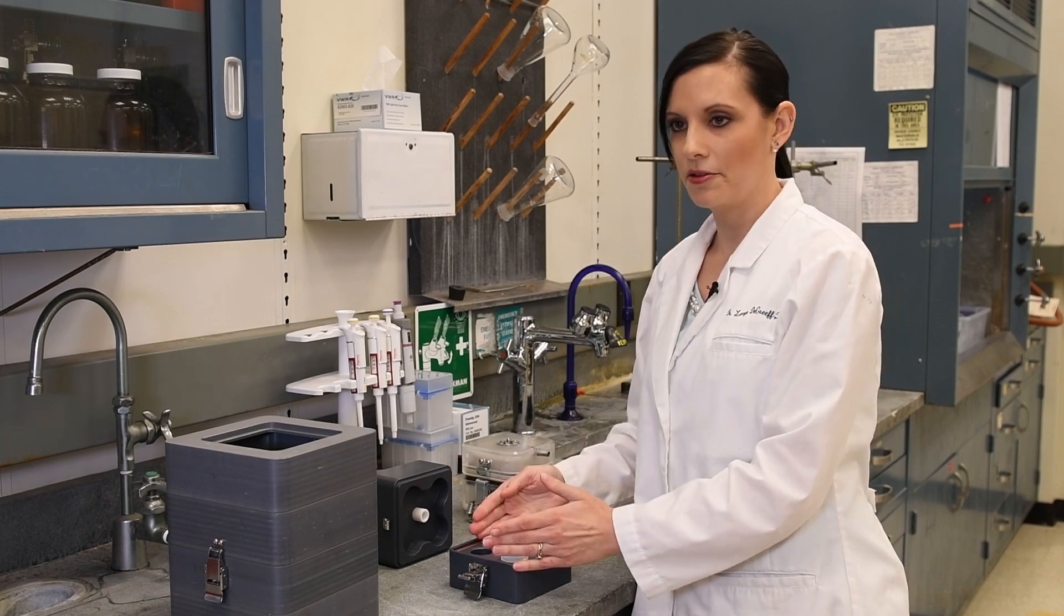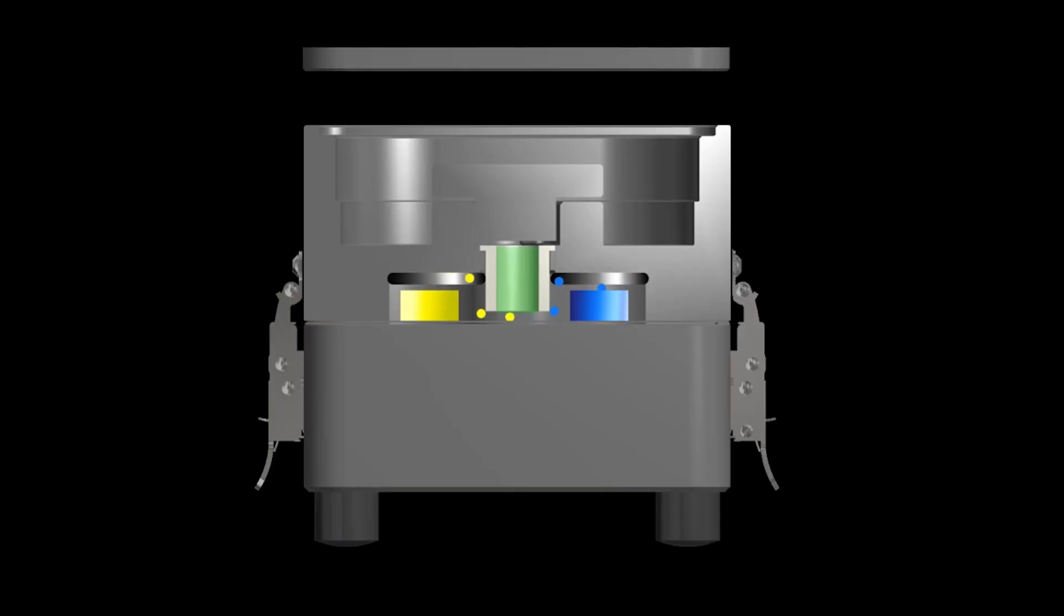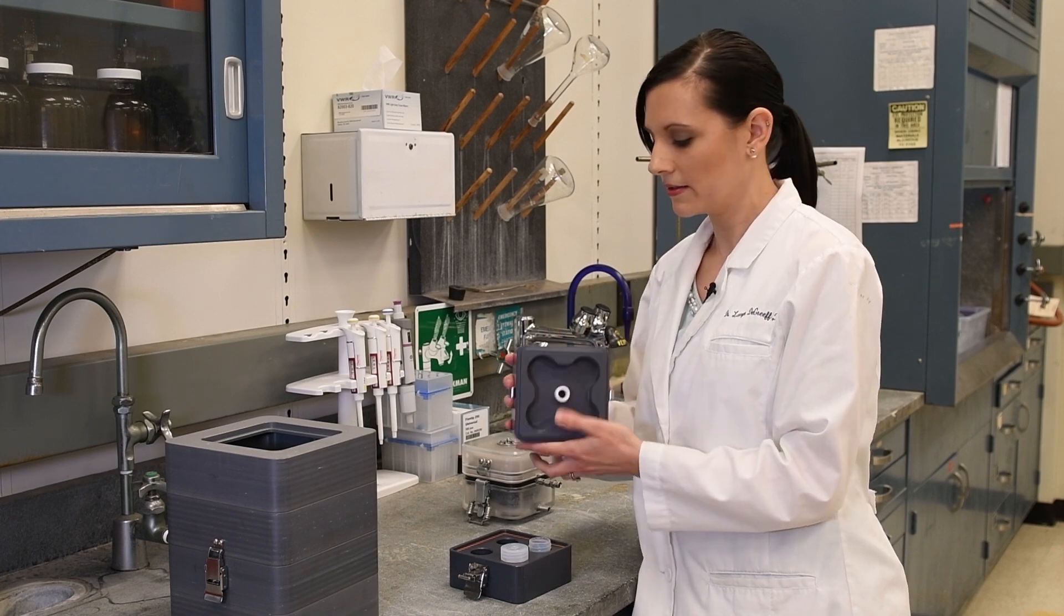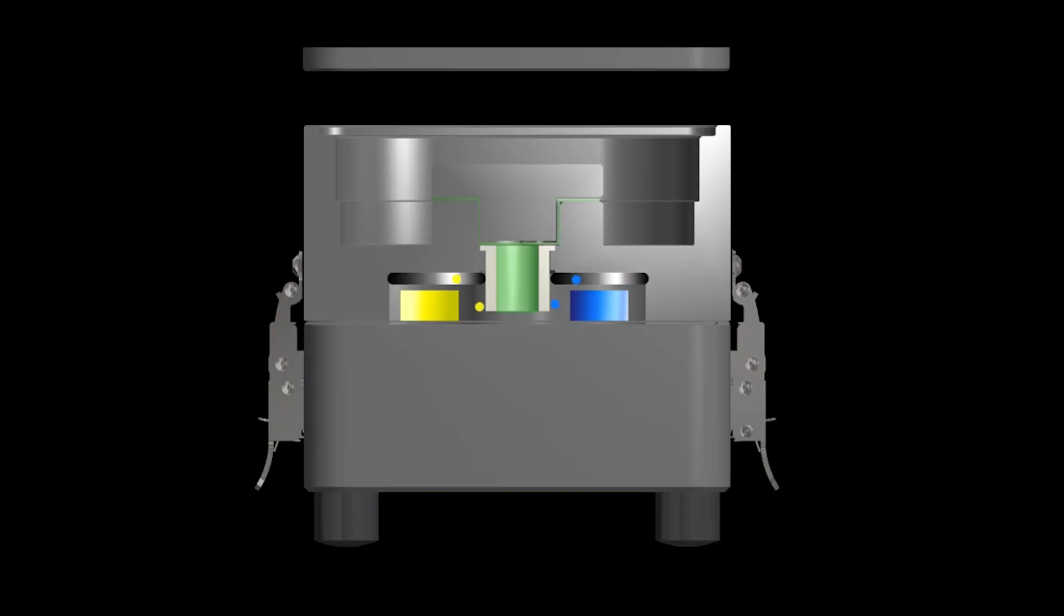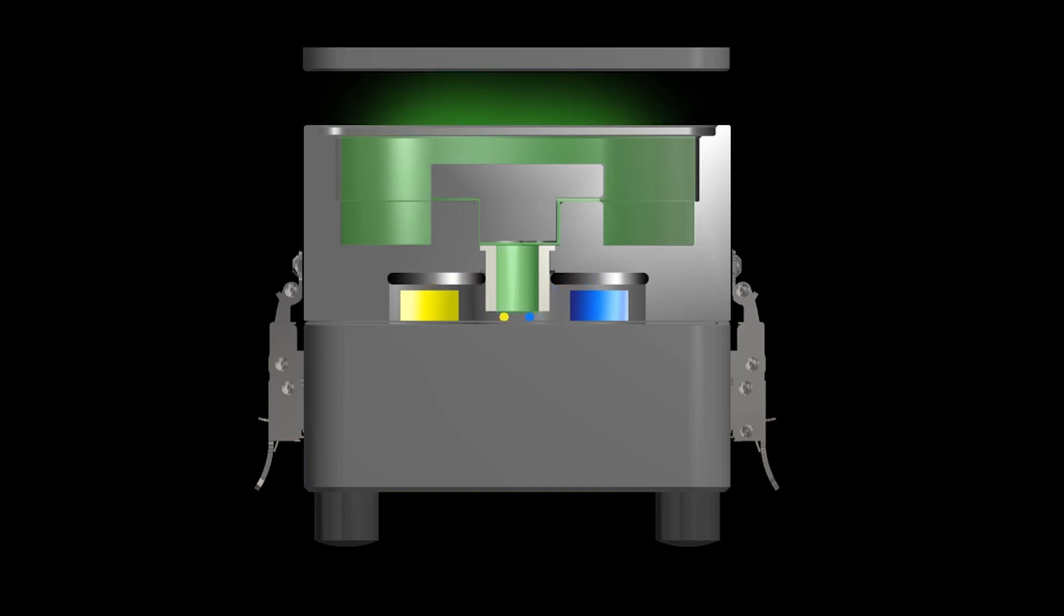So once you have the odors coming out, they're coming out of the vial separately and they enter this neck. In the neck is where the odors mix, and the dog samples at the top of the neck. So the dog is sampling mixed odor.